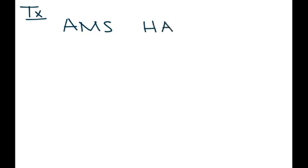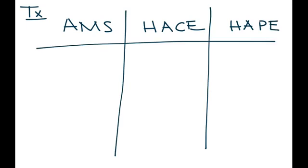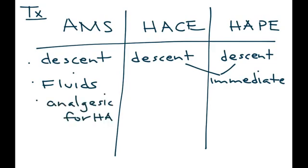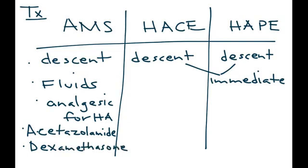For treatment of acute mountain sickness, high altitude cerebral edema, and high altitude pulmonary edema, the common thread is descent — going down the mountain. Descent is immediate for HACE and HAPE. For AMS, you can usually manage with fluids, an analgesic for the headache, and a drug known as acetazolamide or dexamethasone.